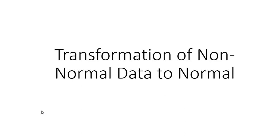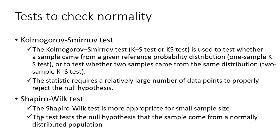Certain tests are available to check normality. One is the Kolmogorov-Smirnov test and the other is the Shapiro-Wilk test. The Kolmogorov-Smirnov test is a non-parametric test of the equality of continuous one-dimensional probability distributions. It is used to test whether a sample comes from a given probability distribution, or to test whether two samples come from the same distribution. The test requires a large number of data points to reject the null hypothesis.